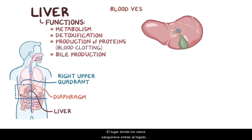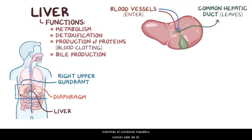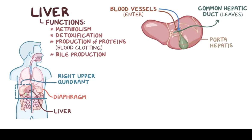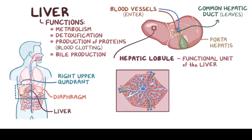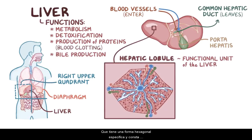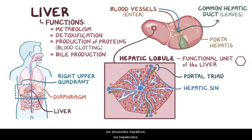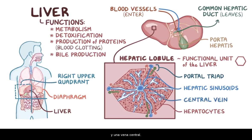The place where the blood vessels enter the liver, while the common hepatic duct leaves it, is referred to as the porta hepatis. Lastly, the main functional unit of the liver is the hepatic lobule, which has a specific hexagonal shape and consists of four main parts: the portal triad, hepatic sinusoids, hepatocytes, and a central vein.